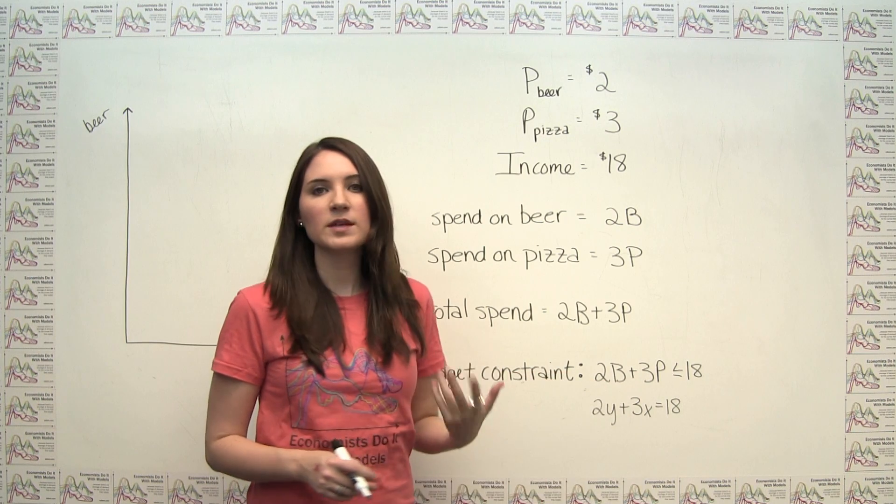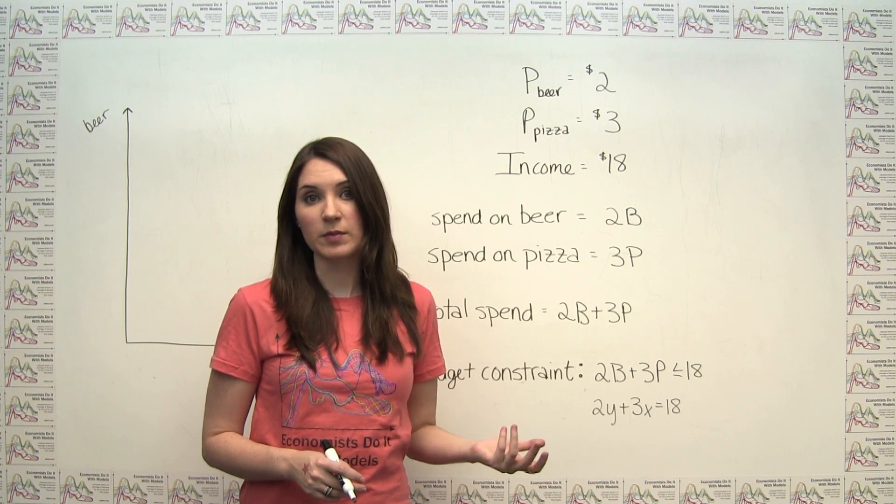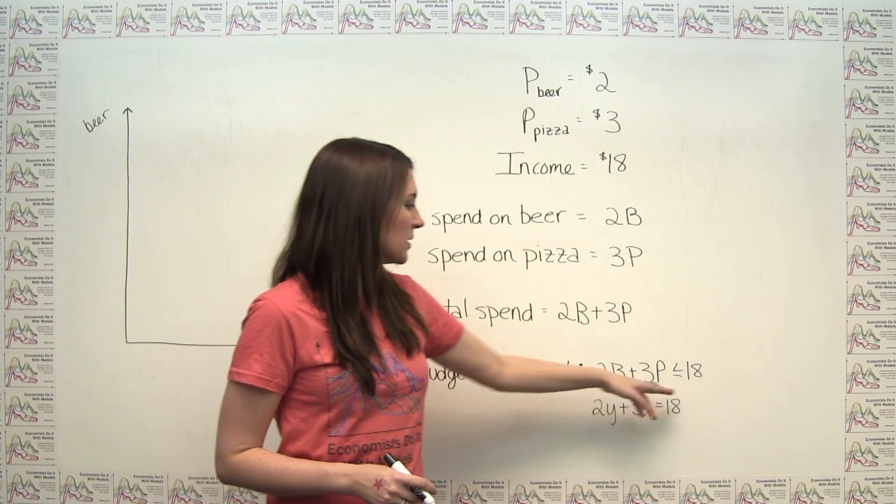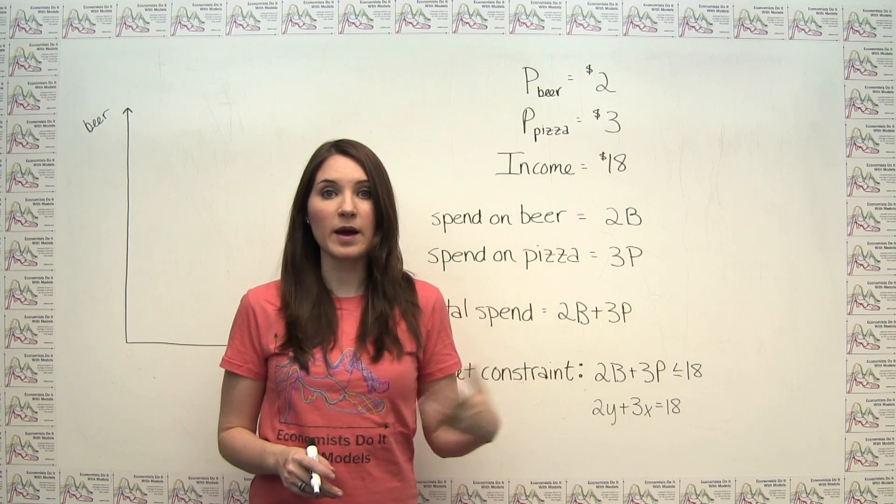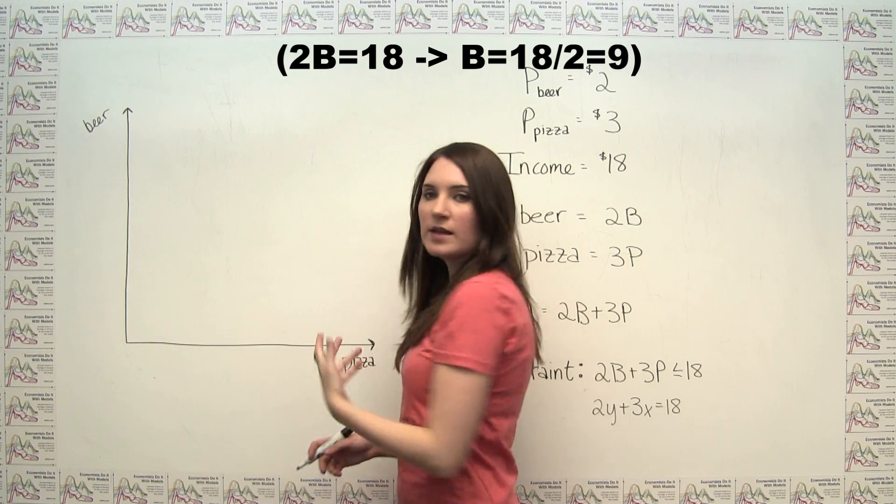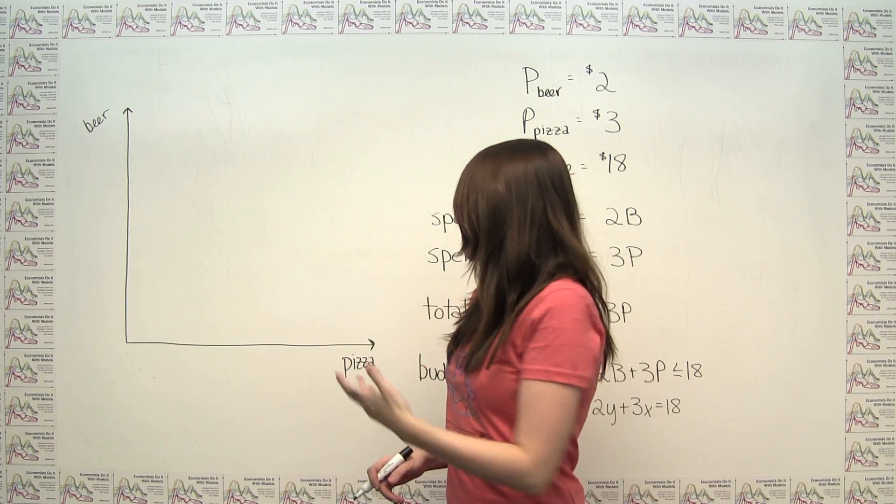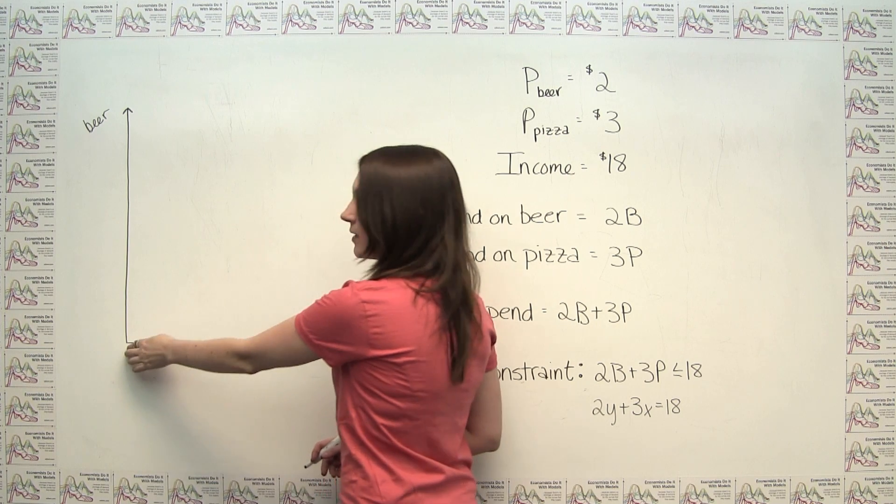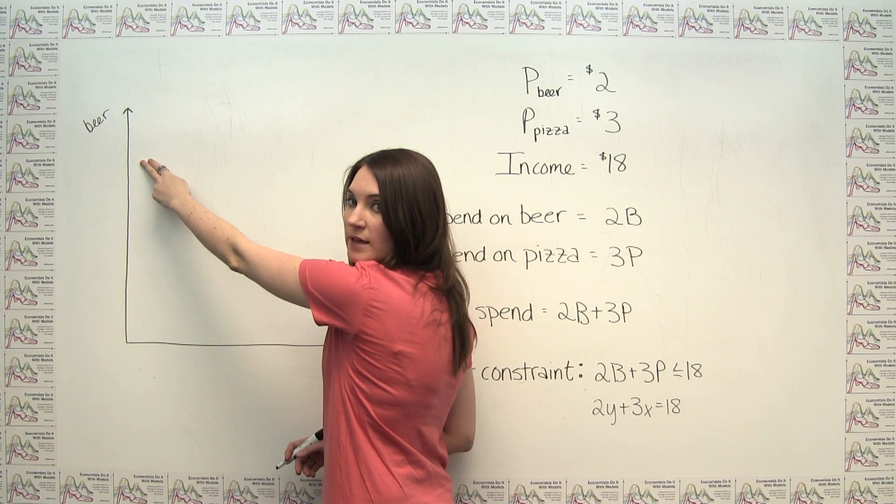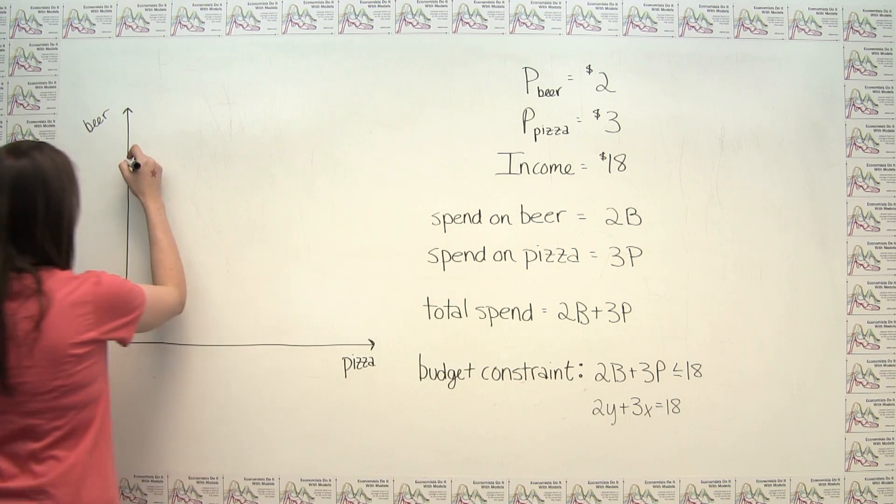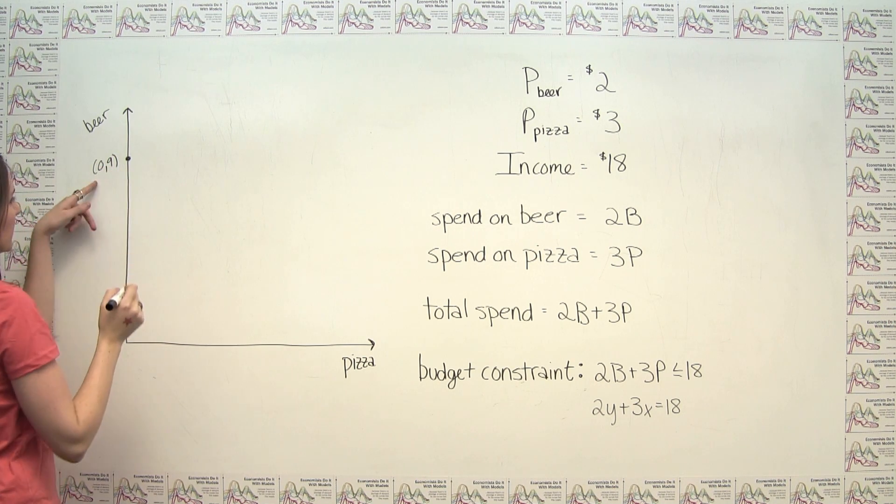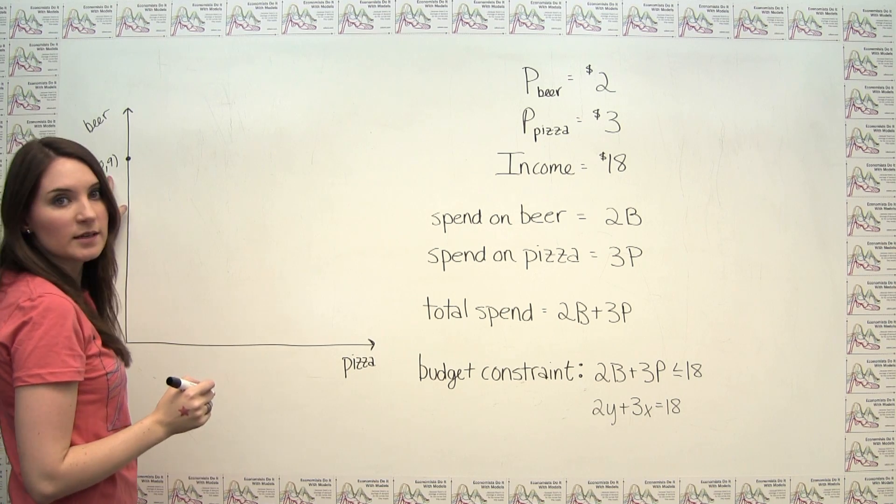If we're buying only beer, what's the maximum quantity of beer that we could buy? So here, if we're buying only beer, then 2b is going to equal 18, and we can say we can buy a maximum of 9 cans of beer. So we can represent that as one of the end points on our budget constraint. If we are not considering buying any pizza, we're going to be over here on the pizza axis. That means we can buy 9 cans of beer. So we could put a point on our budget constraint right here, and you notice this is the point 0, 9 for 0 slices of pizza and 9 cans of beer.